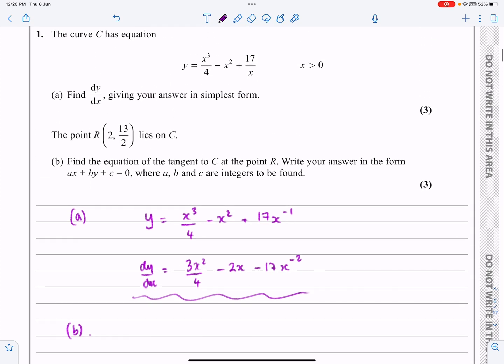What does part B say? It says we've got a point R and it gives me the x and y coordinate. That's really helpful of them. Can I find the equation of the tangent at the point R? And then they want me to write my answer in ax + by + c = 0 rather than y = mx + c.